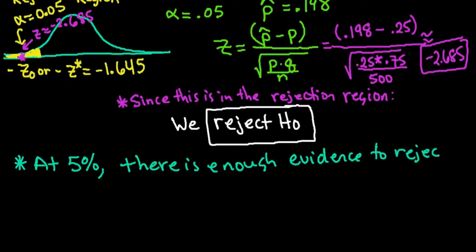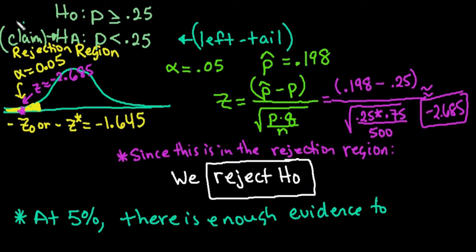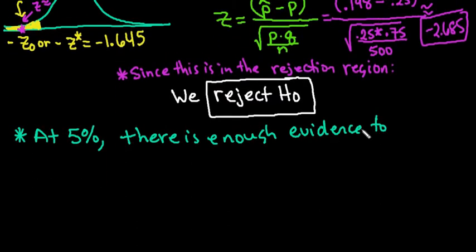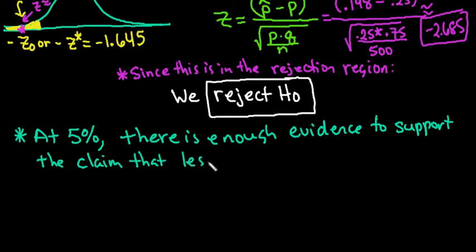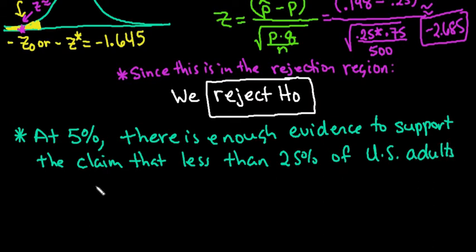When you're interpreting this, you want to make sure that anybody understands what you found. So at 5%, there is enough evidence to reject. Since we rejected, we use the word there is enough. And then we have to go back up and see where our claim is. Since our claim is about the alternative, we use the word support. If the claim is about the null, then we would have used the word reject. So at 5%, there is enough evidence to support the claim that less than 25% of U.S. adults are smokers.